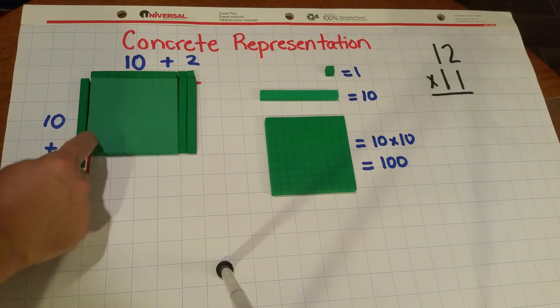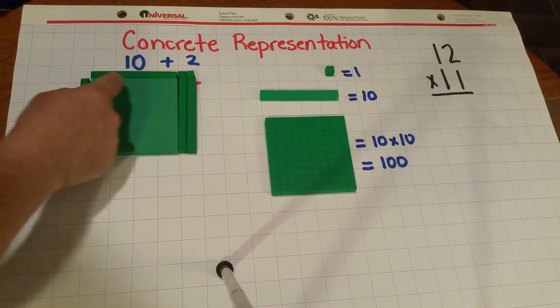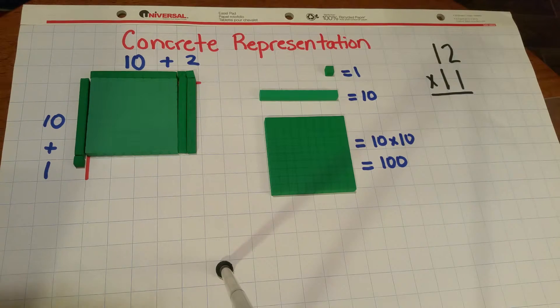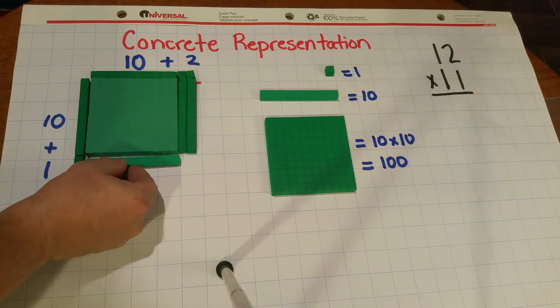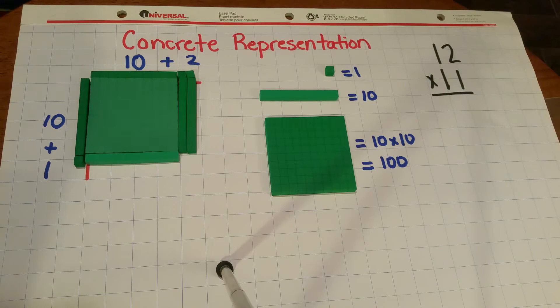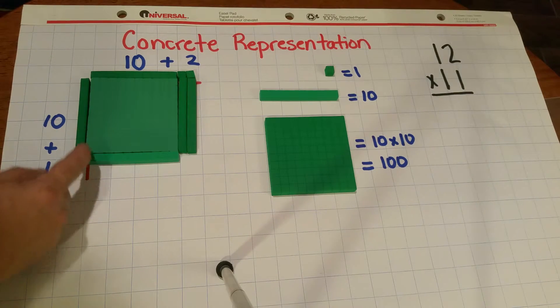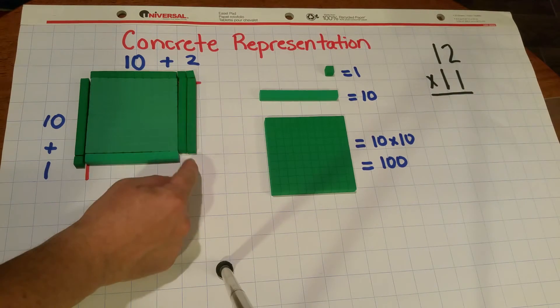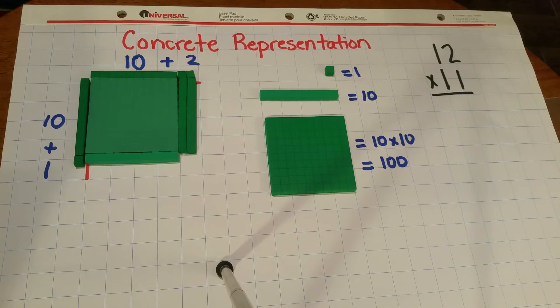So you can see here that I have 10 rows and 12 columns in this array, and to get to my 11th row, I have to add in an extra row here. So now I have 11 rows by 12 columns, but you can see that over here the array is not complete.